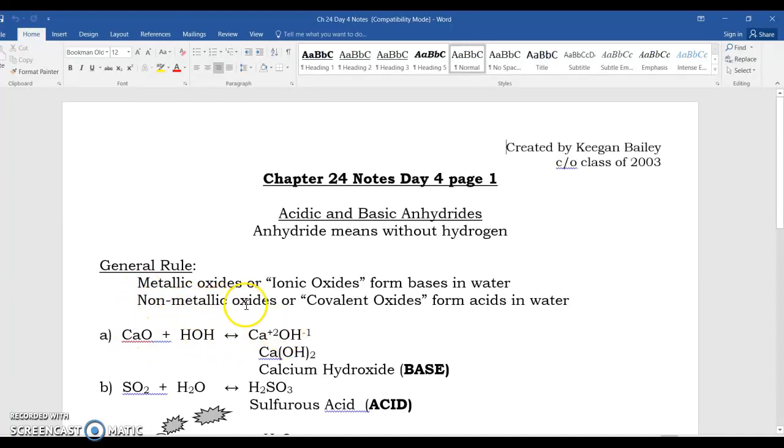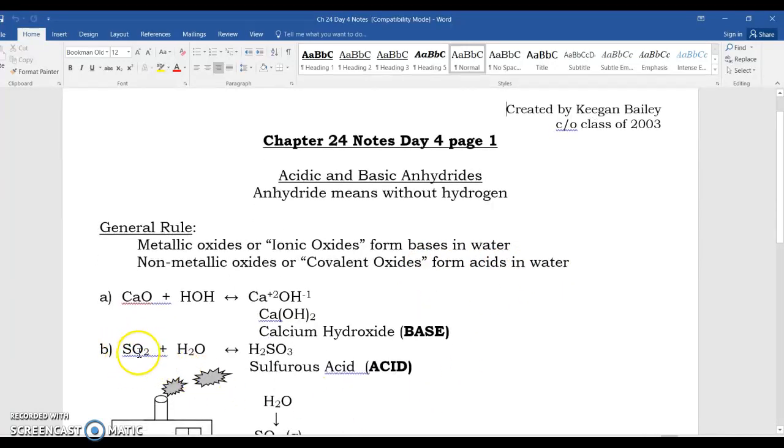Vice versa, if you have non-metallic oxide, which is on the right side of the periodic table, non-metals, they call them covalent oxides and form acids in water. So here's an example, SO2, sulfur oxide.